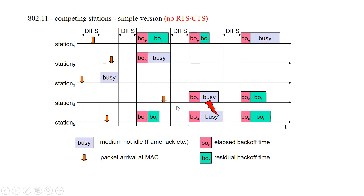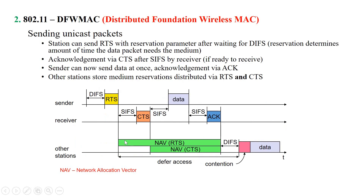When two stations have the same back-off time, their contention windows elapse simultaneously, resulting in a collision. This highlights a flaw: there is no mechanism for stations to communicate with each other about whether the medium is free, so collisions can occur.